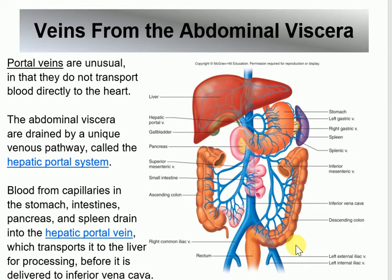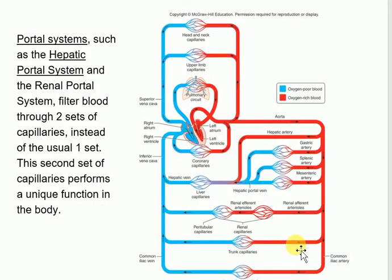After the liver processes the blood, it leaves through the right and left hepatic veins back to the inferior vena cava. So ultimately the blood does return to the heart, but not through the hepatic portal system itself. You need to label the hepatic portal vein and answer critical thinking questions about its function. It is usually shown as a purple vessel because it carries mixed blood going toward the liver.